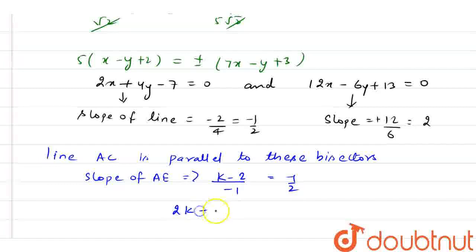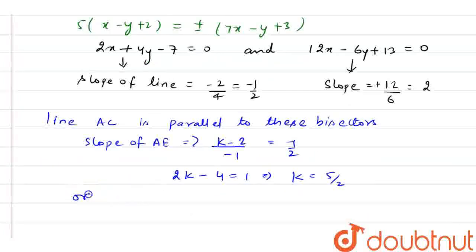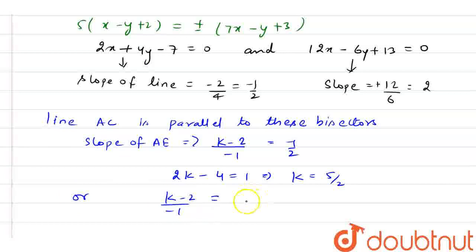So we have 2k - 4 = 1. And finally, the value of k is 5/2.